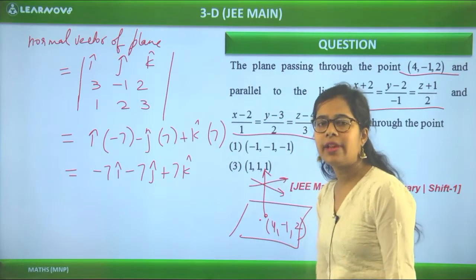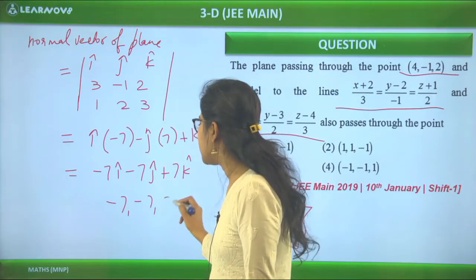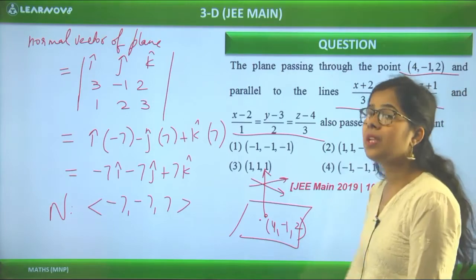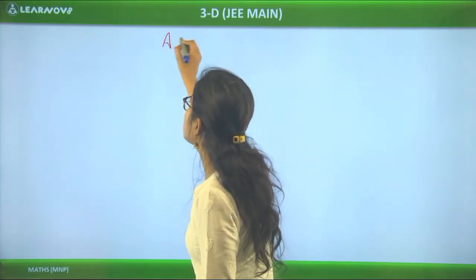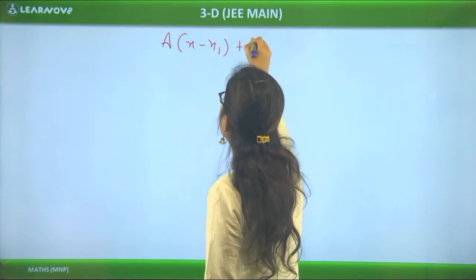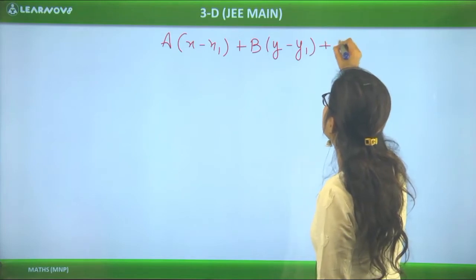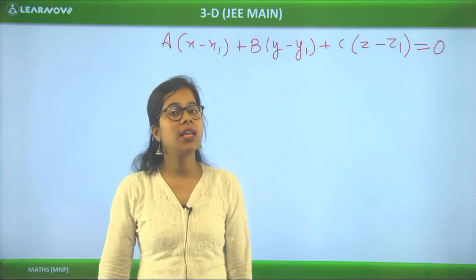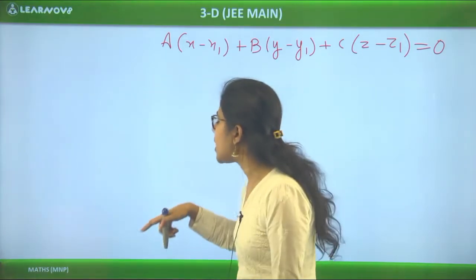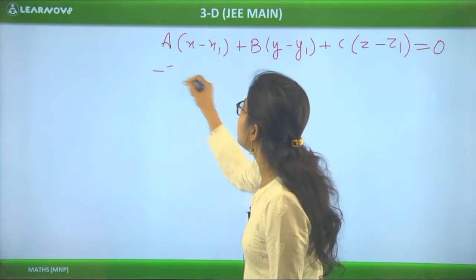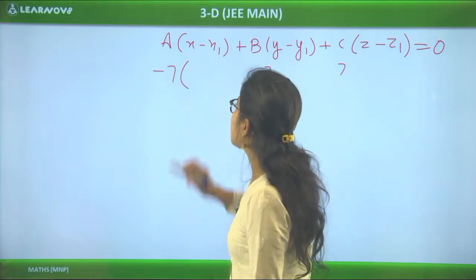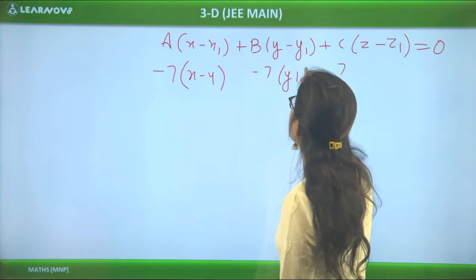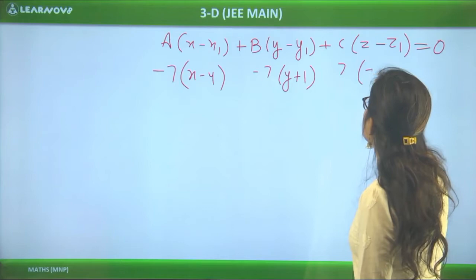Now we have the normal vector direction ratios and the point (4, -1, 2). The equation of a plane is A(x - x₁) + B(y - y₁) + C(z - z₁) = 0. With A = -7, B = -7, C = 7 and point (4, -1, 2), we write: -7(x - 4) - 7(y + 1) + 7(z - 2) = 0. Taking -7 as common factor, we simplify to: (x - 4) + (y + 1) - (z - 2) = 0, giving x + y - z - 1 = 0.